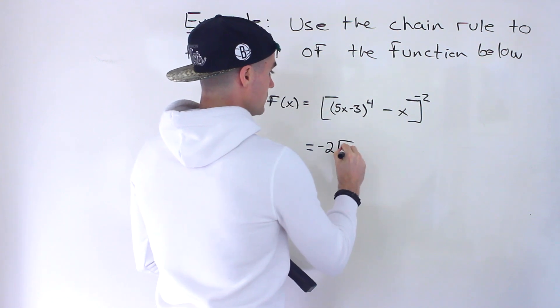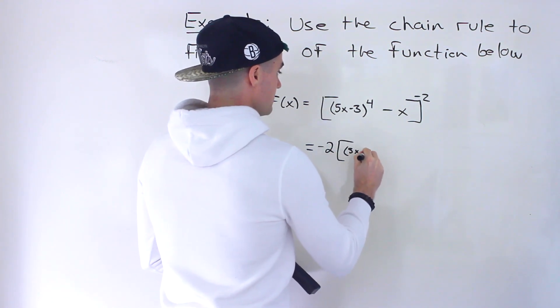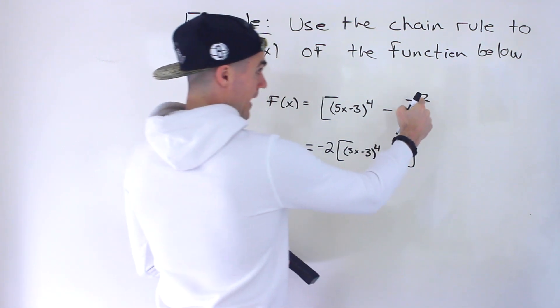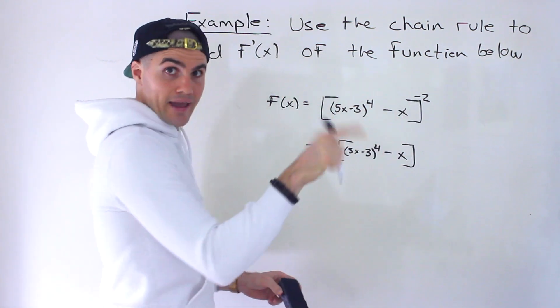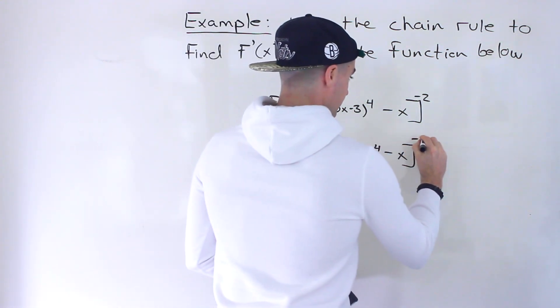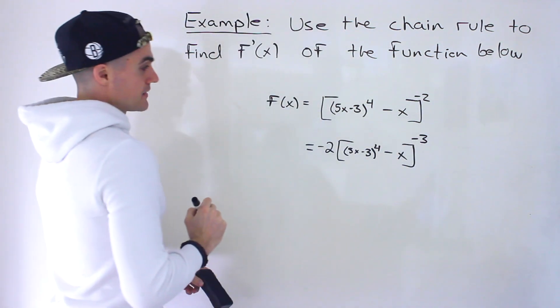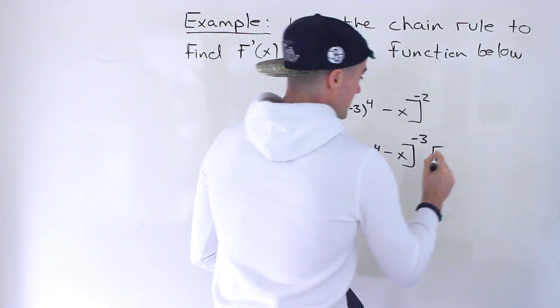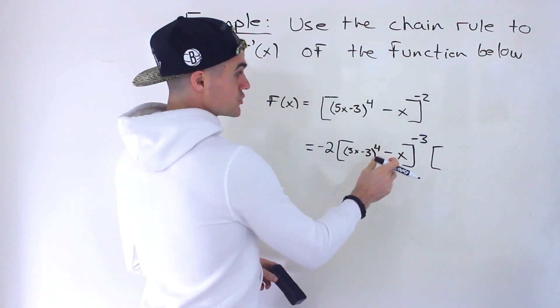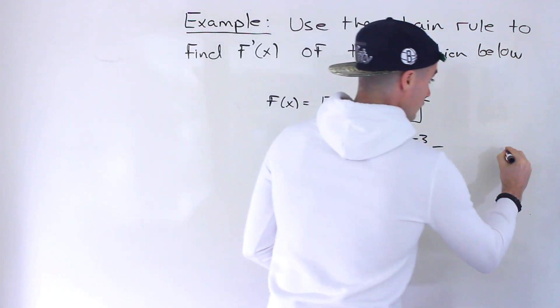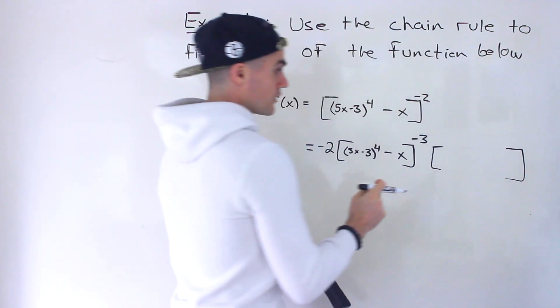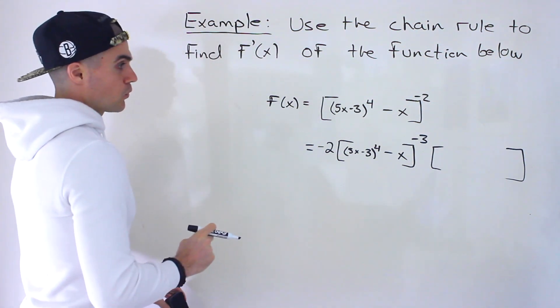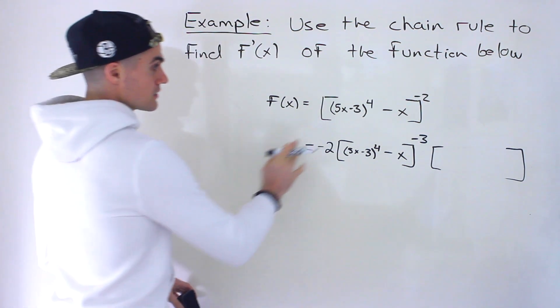And then what? We would subtract 1 from the exponent. Negative 2 minus 1 gives us minus 3. But then what we have to do is multiply this by the derivative of that inner function. So the derivative of that inner function is going to go in these square brackets here. And then I'm going to work with that derivative on the side here.